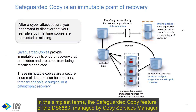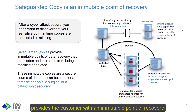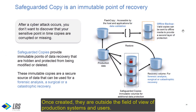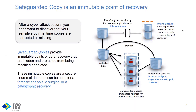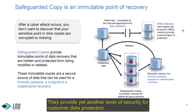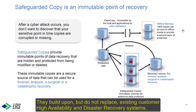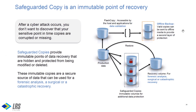All management functions for Safeguarded Copy are done within the Copy Services Manager product. It can reside within the DS8000 on the Hardware Management Console hardware, or it can be outboard in a customer-supplied server. In the simplest of terms, the Safeguarded Copy feature, managed by Copy Services Manager, provides customers with an immutable point of recovery. Once created, they are outside the field of view of production systems and users. They provide yet another level of security for customer data protection, and build upon — but do not replace — existing high availability or disaster recovery systems.